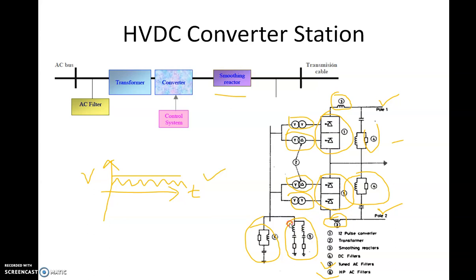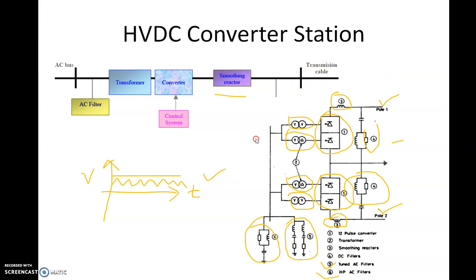In brief, the HVDC converter station has the following major components: AC filter, transformer, converter — which is controlled by the control system — smoothing reactor, and DC filters, after which the power is given to the transmission cable.